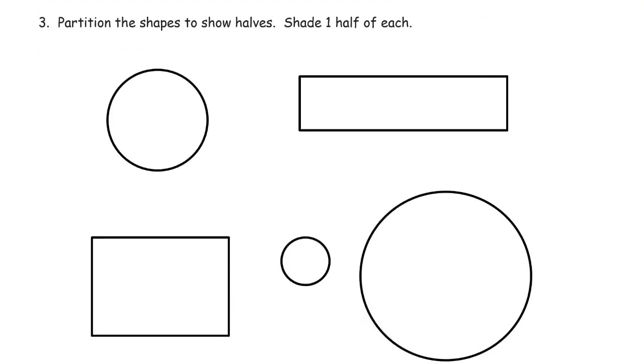Partition the shapes to show halves and shade one half of each. So now, same thing as on the first page, except now I'm drawing the line that makes halves, and then I'm shading. Here's the trick with circles: figure out where the center is first, the exact middle of the circle, and put a dot there. Just make your best guess as to where it is.